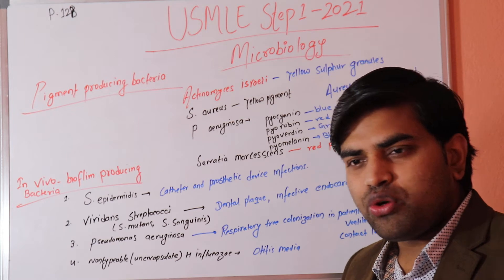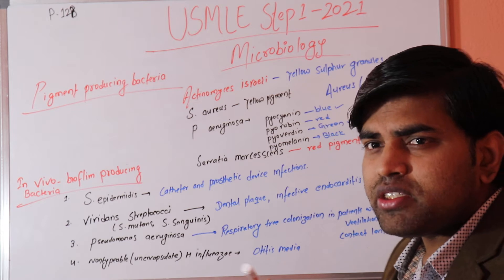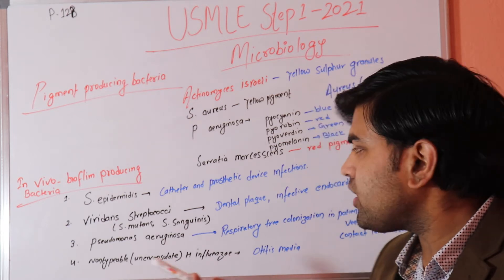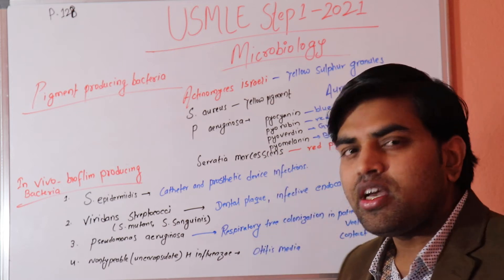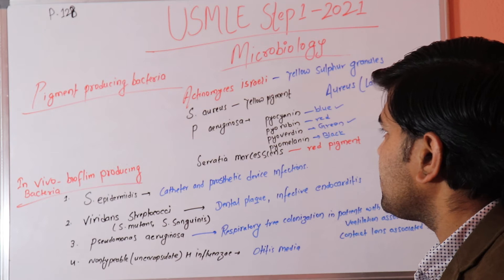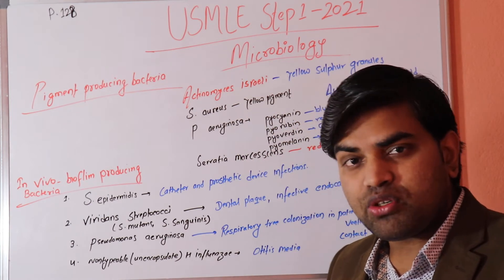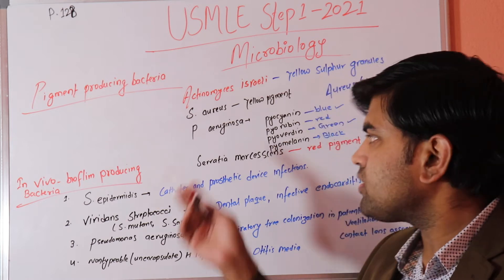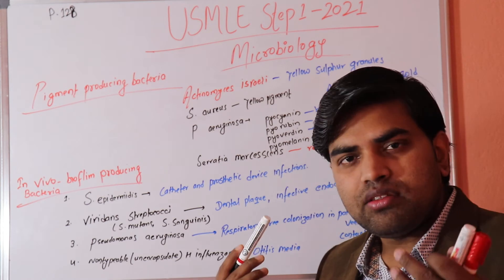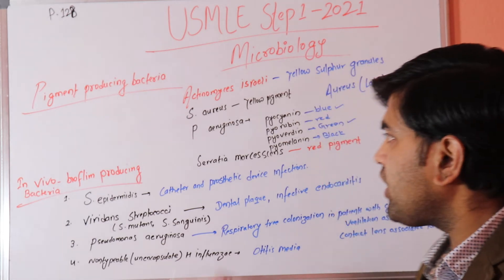Serratia marcescens mainly grows in ICU patients on polymyxin and other drugs for long periods, and they typically develop Serratia septicemia or bacteremia. Staph aureus is the most common cause of wound and surgical site infection and osteomyelitis. Actinomyces israelii is an anaerobic, filamentous organism responsible for many anaerobic infections.